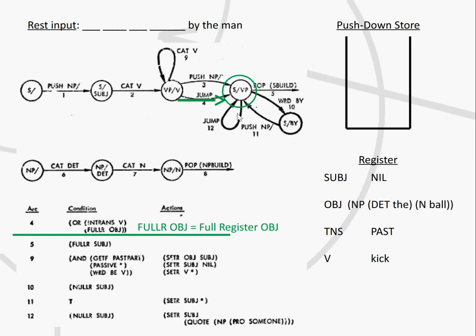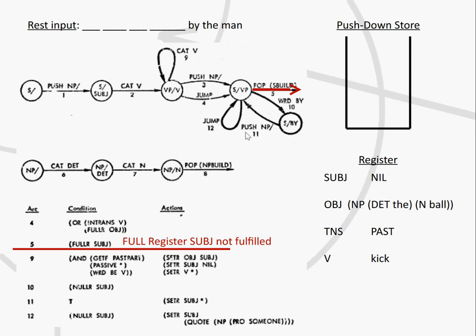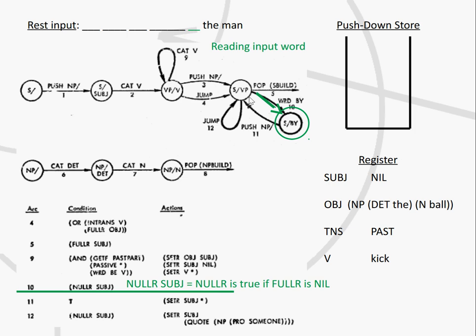That means we can now, without doing anything more, go into the next state. There we have the transition out of the automaton to build the whole sentence, but now with the condition that the subject must be filled. Instead of exiting, we take a different transition. The word before was 'by', so we now read 'by' by taking that transition. The condition is that the word must be 'by' and that the subject is null, which is true because we have null in the register.